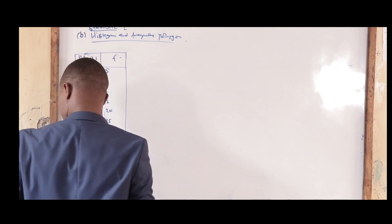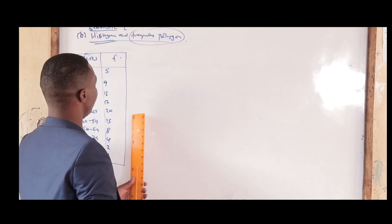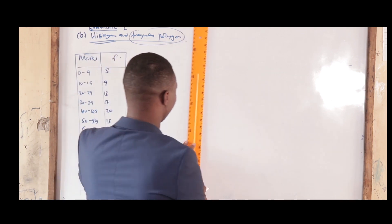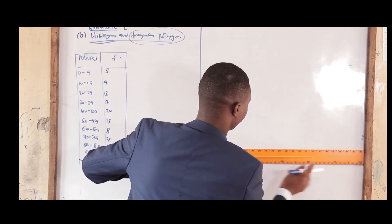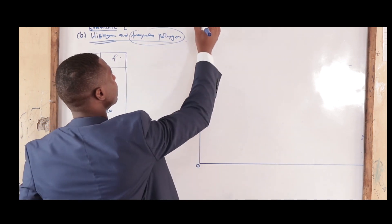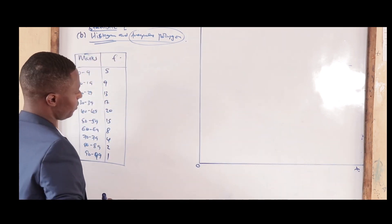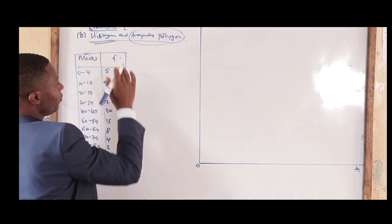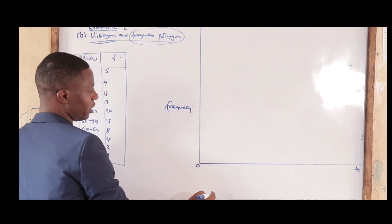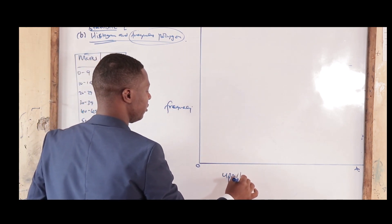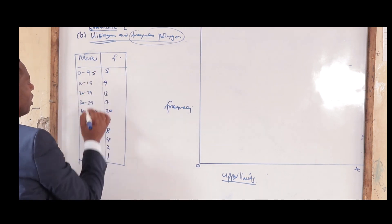For us to draw the frequency polygon, you must first draw the histogram. On your graph, you have the y-axis and the x-axis. For the histogram, on the y-axis you have the frequency, and on the x-axis you have the upper class limits. The upper limits are these values here — you add 0.5 to each upper boundary.